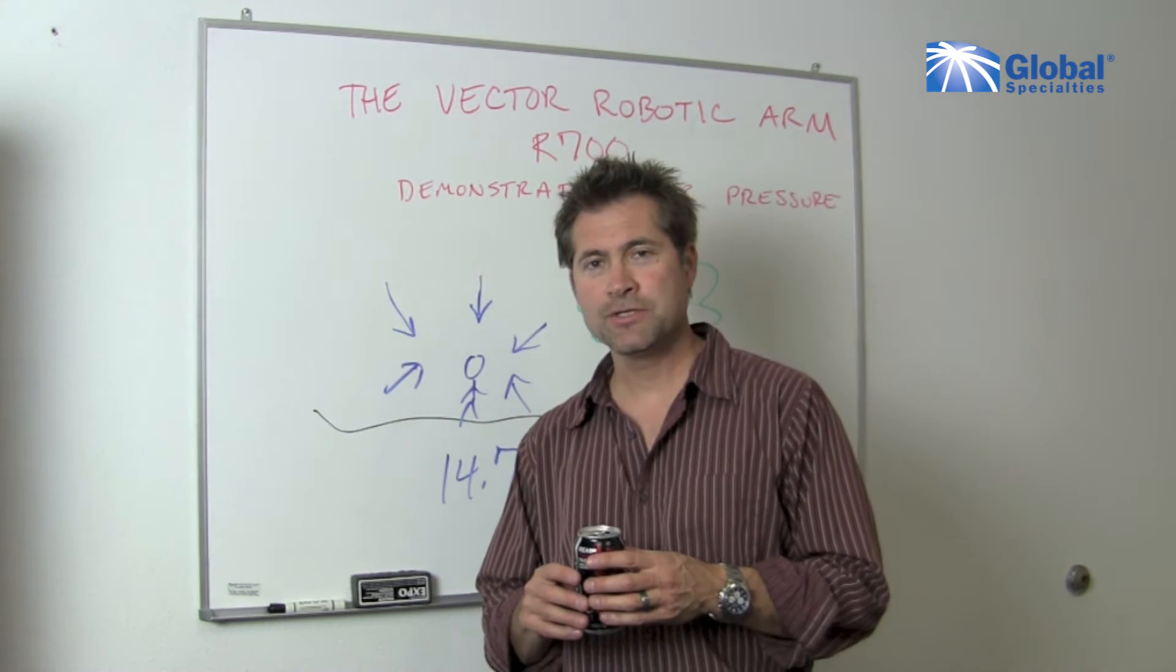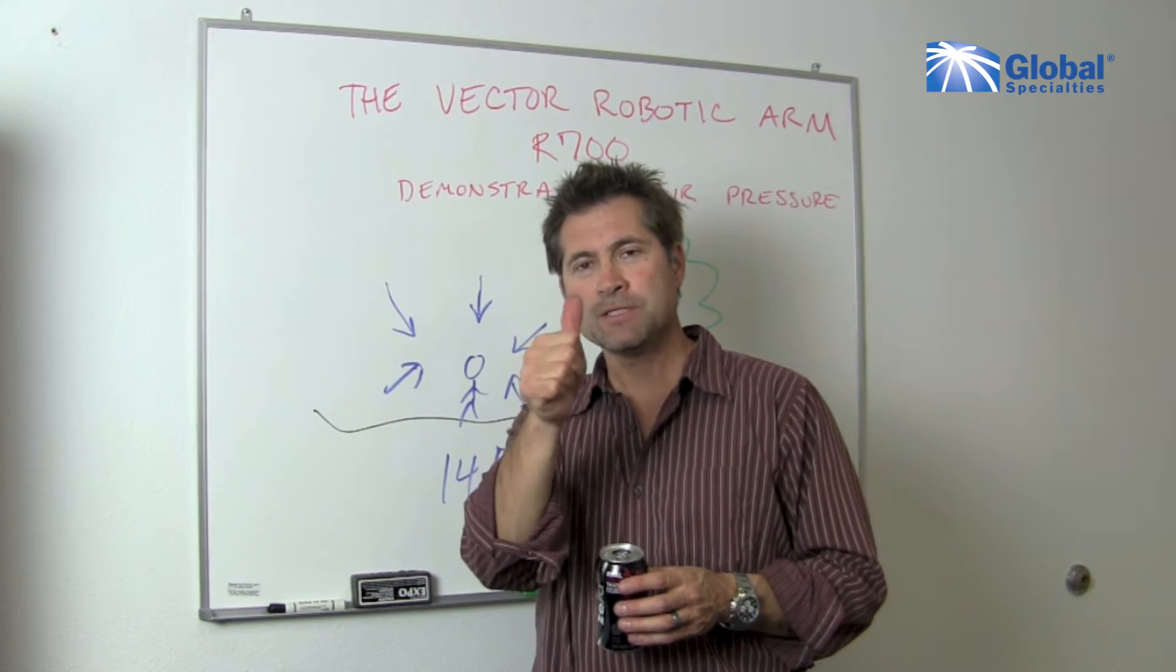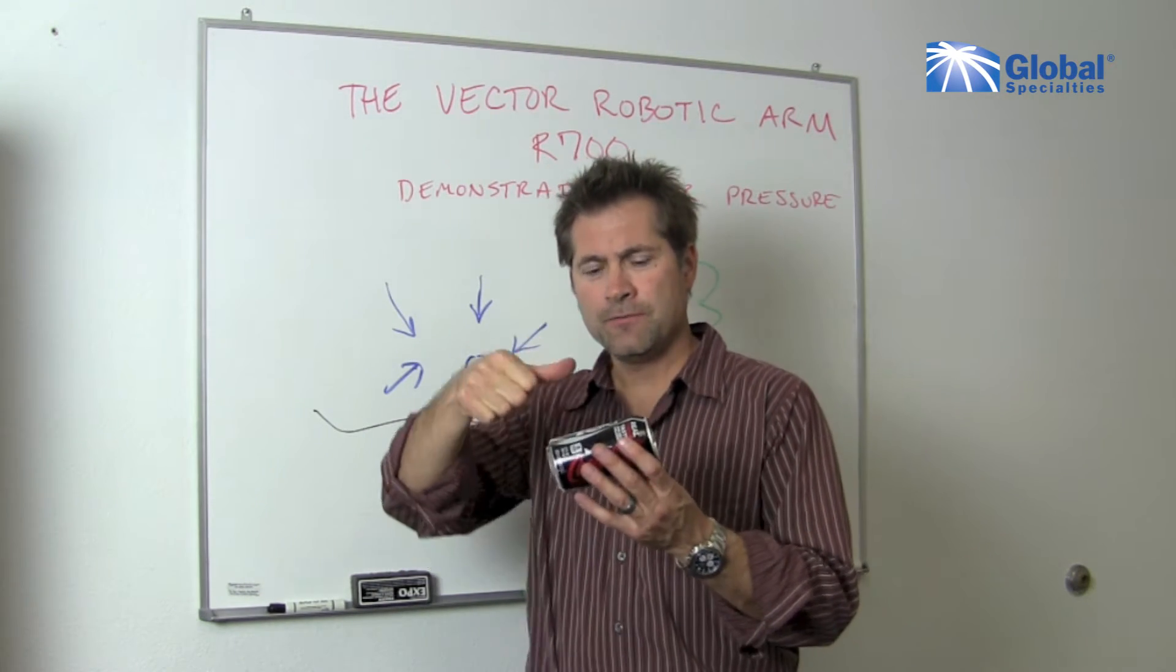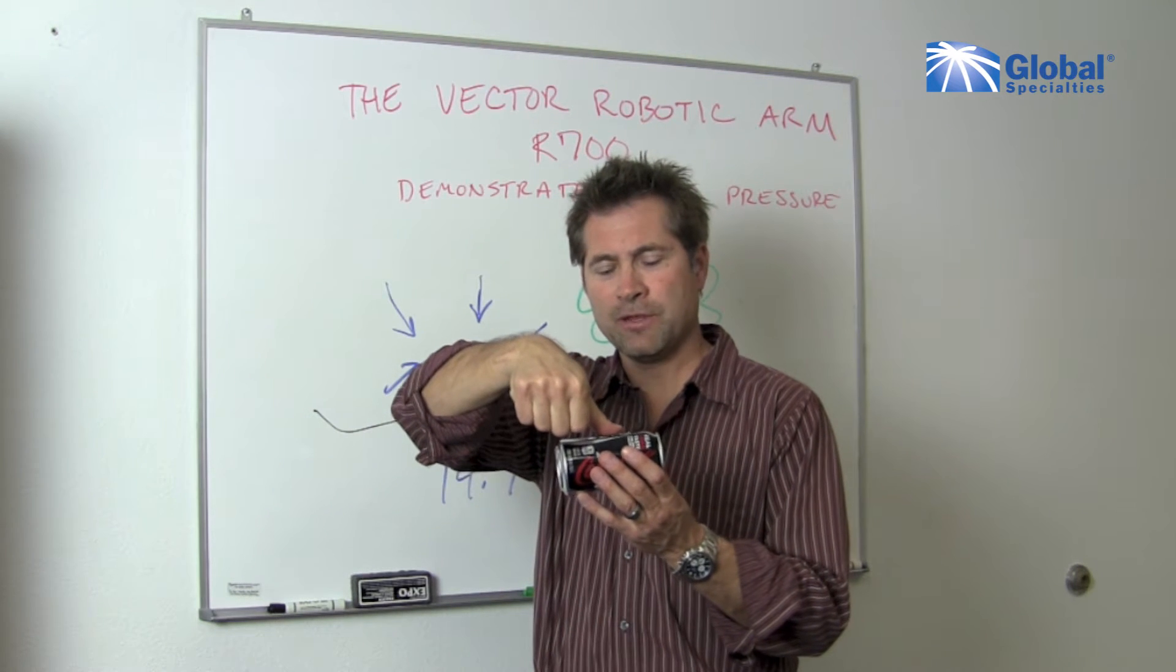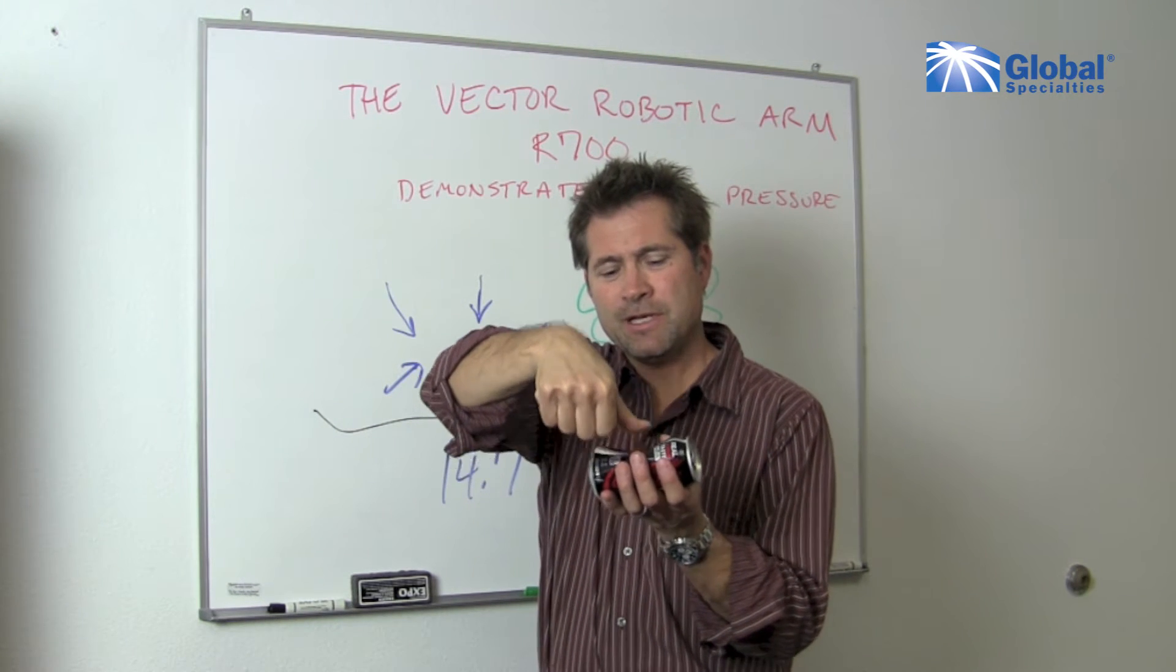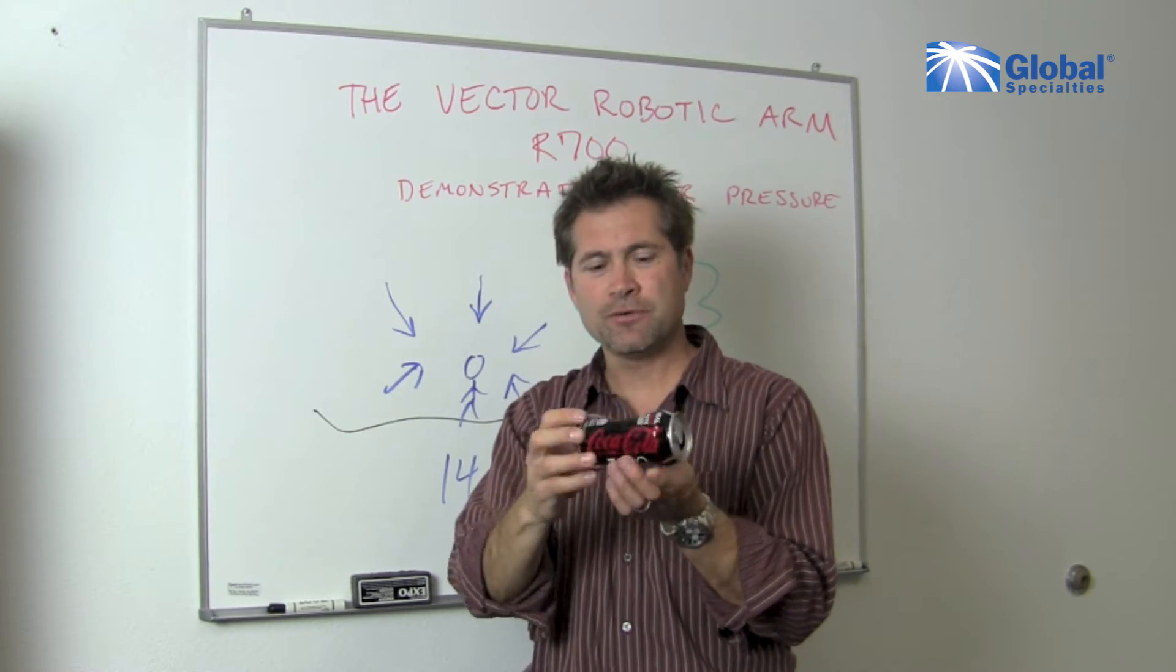14.7 pounds per square inch is quite a bit. Look at your thumb, that's about a square inch. And if you push on an aluminum can with about 15 pounds of pressure, it's very easy to see that the can is going to start being crushed.